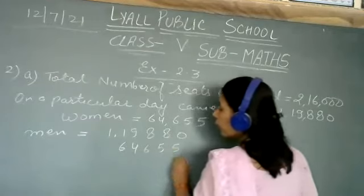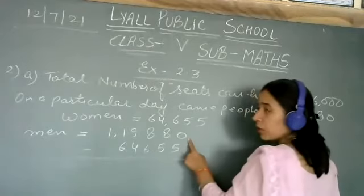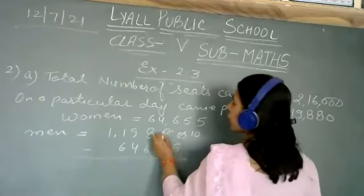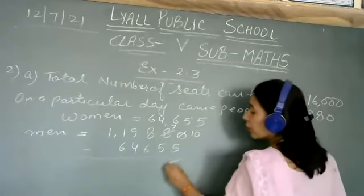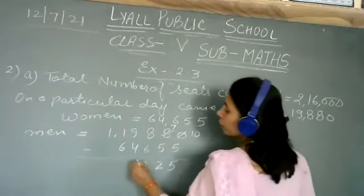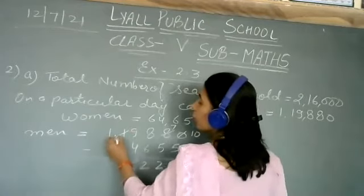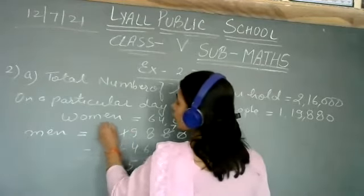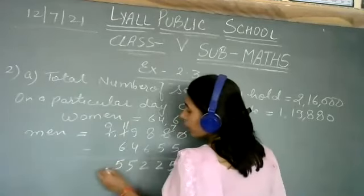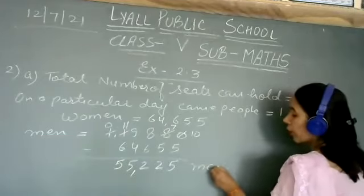Subtracting 64,655 from 1,18,880: 0 minus 5 — cannot subtract, borrow from 8: 0 becomes 10, 8 becomes 7; 10 minus 5 is 5; 7 minus 5 is 2; 8 minus 6 is 2; 9 minus 4 is 5; 1 minus 6 — cannot subtract, borrow: 1 becomes 11; 11 minus 6 is 5. So the number of men is 55,225.